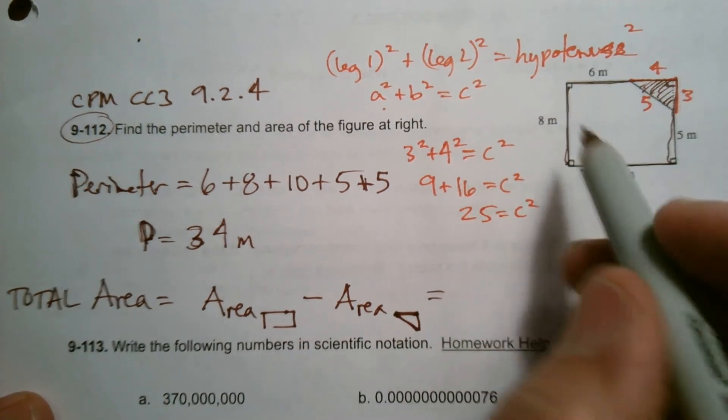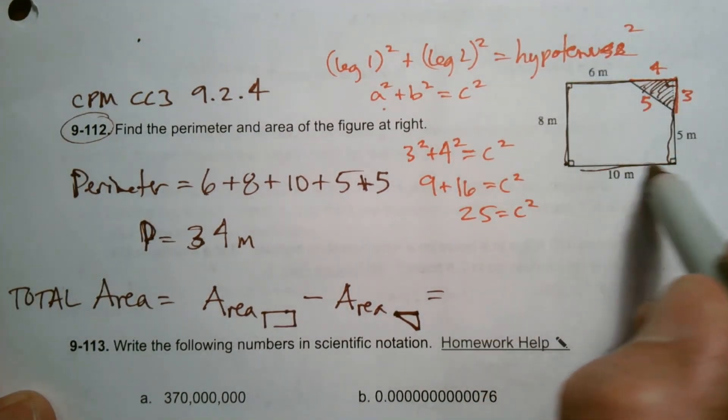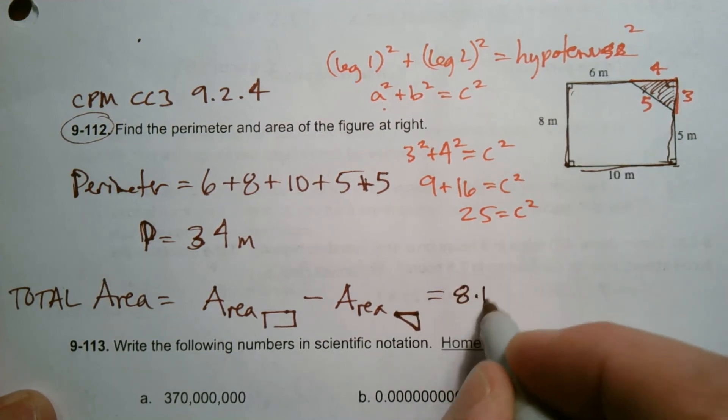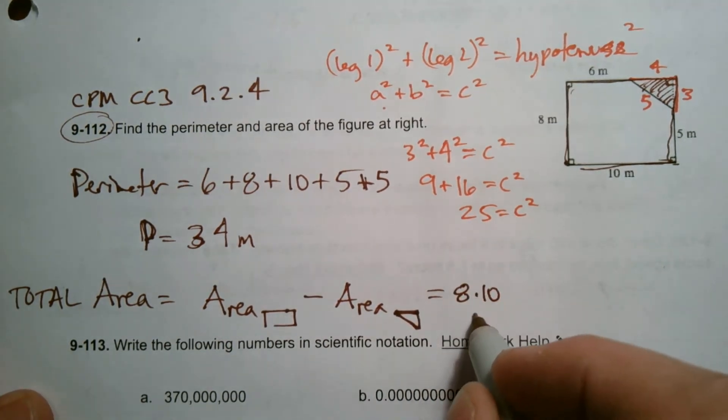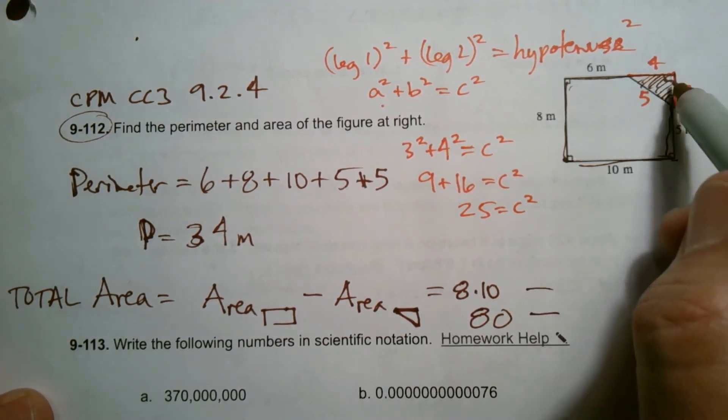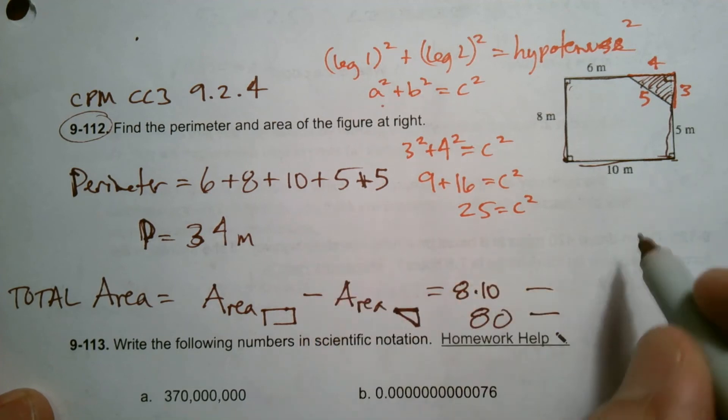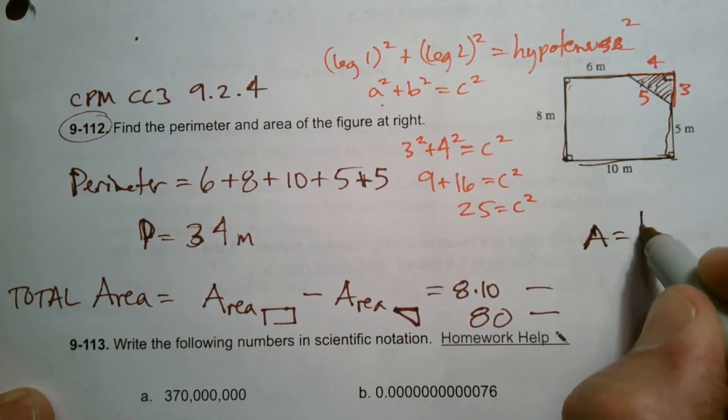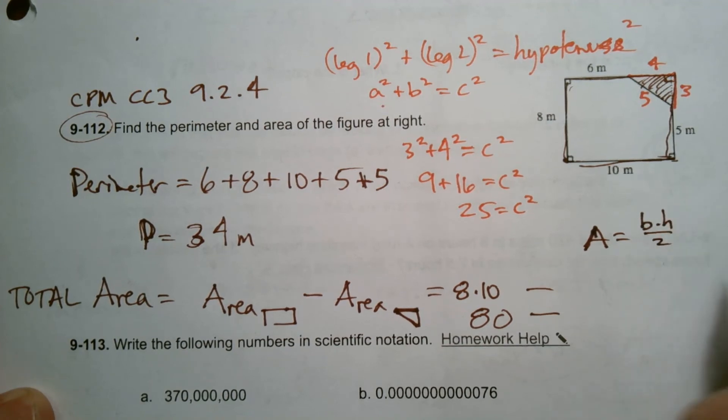So area of the rectangle is base times width, or base times height, or length times width. So that's eight times 10. So we know that that's going to be 80, right? And I'm going to subtract from that the area of the triangle. And remember, area of triangle, just so we remember, area of triangle, any triangle is your base times your height divided by two, or one half base height.